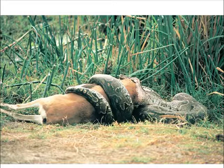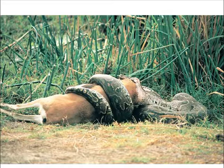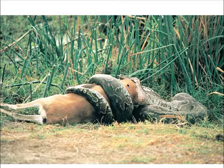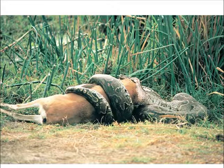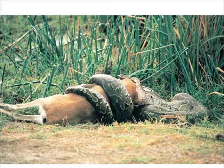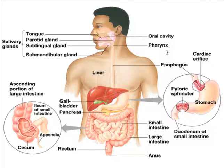It doesn't matter what type of animal it is — all animals need to digest things, to take things in and break them down. Just like this boa constrictor needs to break down all the parts of its prey into individual sugars, nucleic acids, proteins, and amino acids, so the boa constrictor can make its own proteins rather than use the animal's proteins.